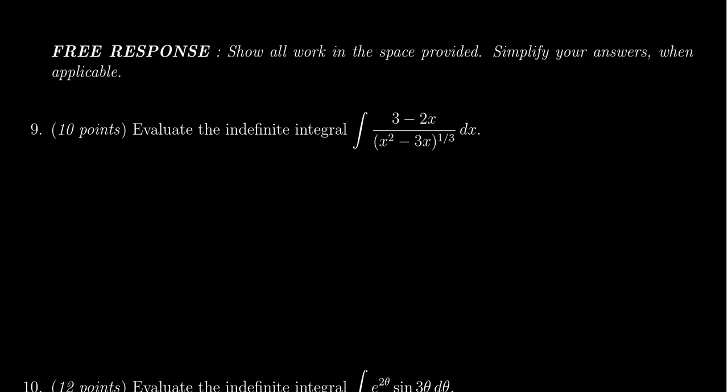I'm going to do this using a u substitution. My thought process is I have this x squared minus three x in the denominator. It's raised to the power of one-third. It'd be really nice if its derivative is on top. So I'm going to try a u substitution.